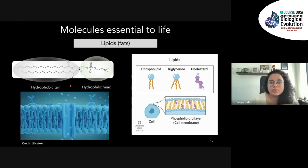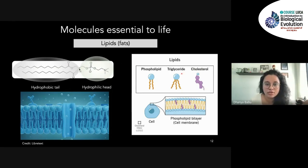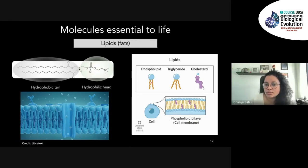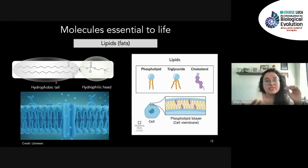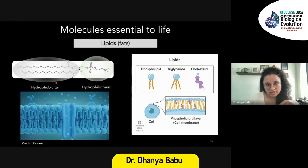Lipids — triglycerides — are energy storage in our body. We also have other kinds of lipids called phospholipids and cholesterol, and these form the cell membrane. The physical barrier of cells in our bodies is made of phospholipids and cholesterol. That's why these are also important molecules to consider in origin of life research.